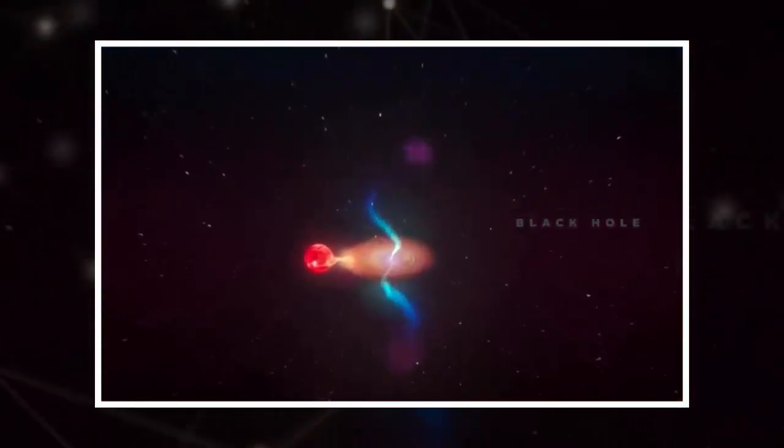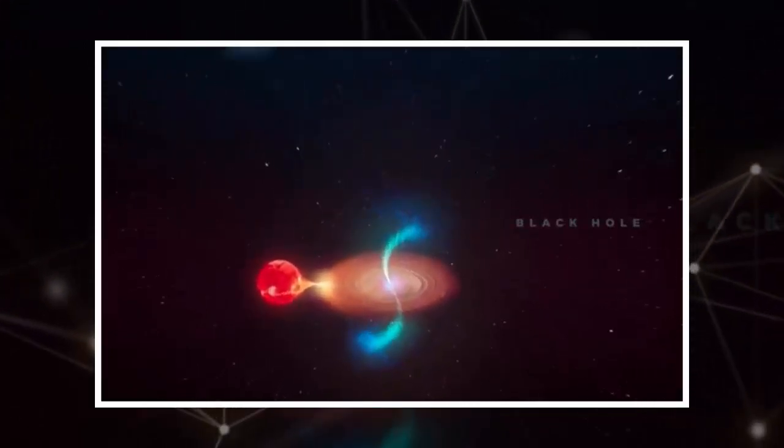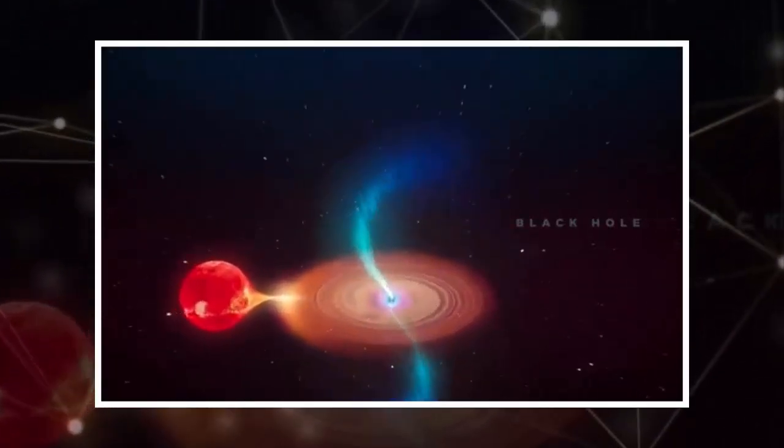Scientists hope their findings will help them understand other extreme events in the universe. Any time you get a misalignment between the spin of a black hole and the material falling in, you would expect to see this when a black hole starts feeding very rapidly.